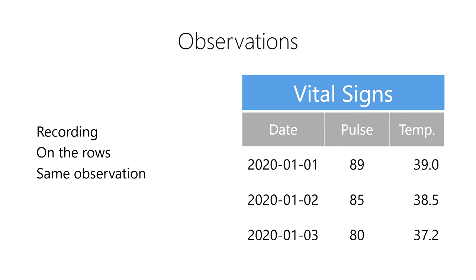In data science, we want each row to contain one and only one observation. Essentially, each row should record one and only one person, place, or thing being observed at a given time.